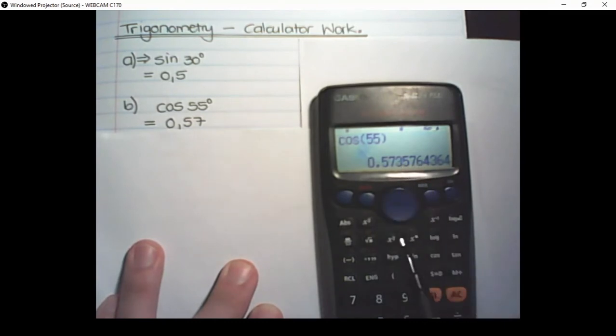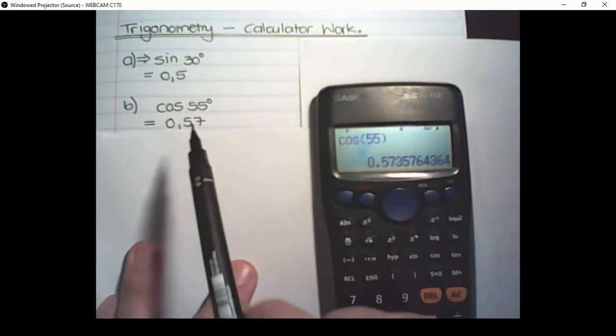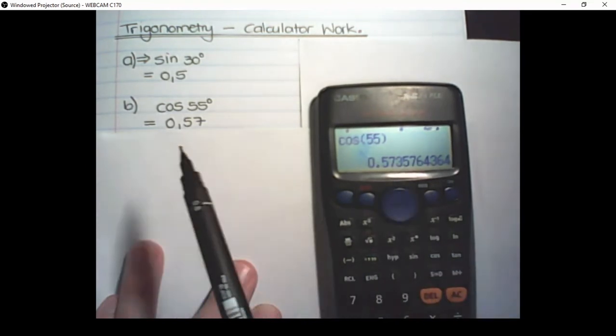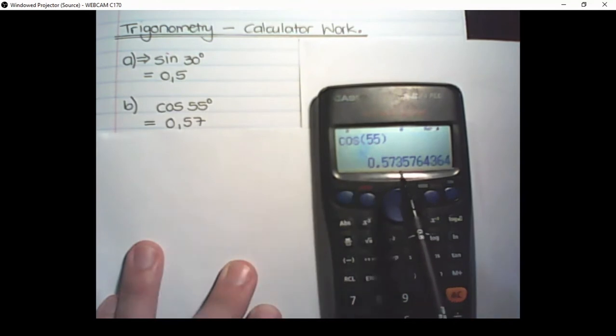Now I round it off to two decimal places. See the value of the 7 is 3. So rounding off that will mean I throw away the rest of the decimals.